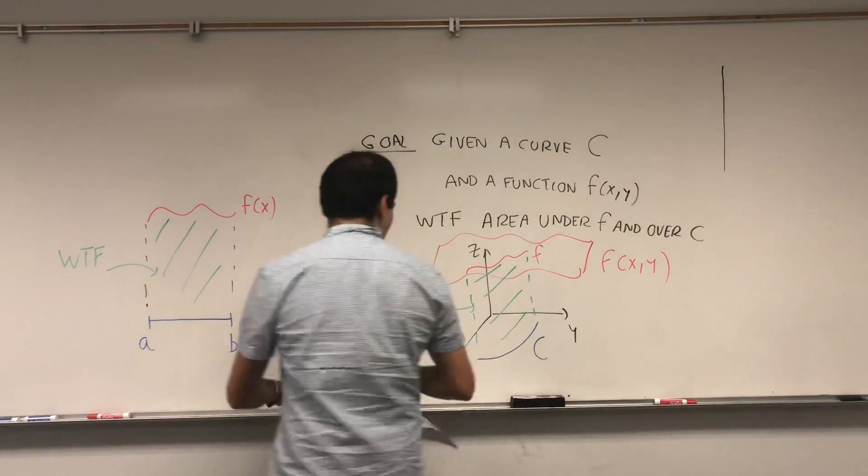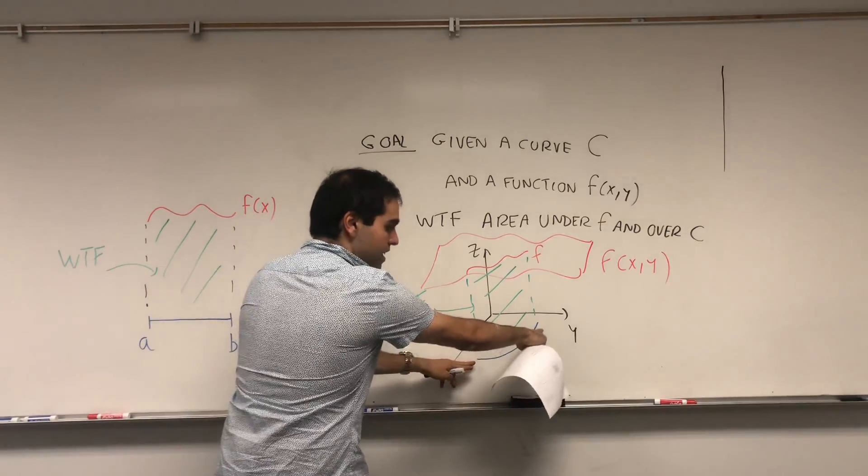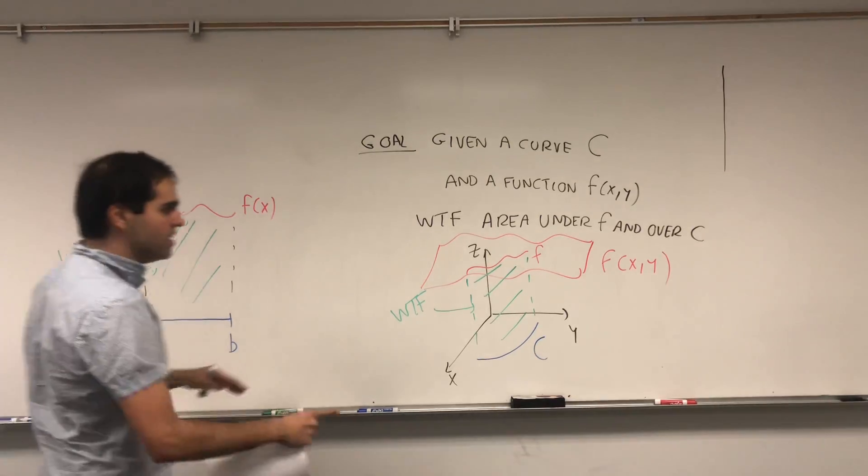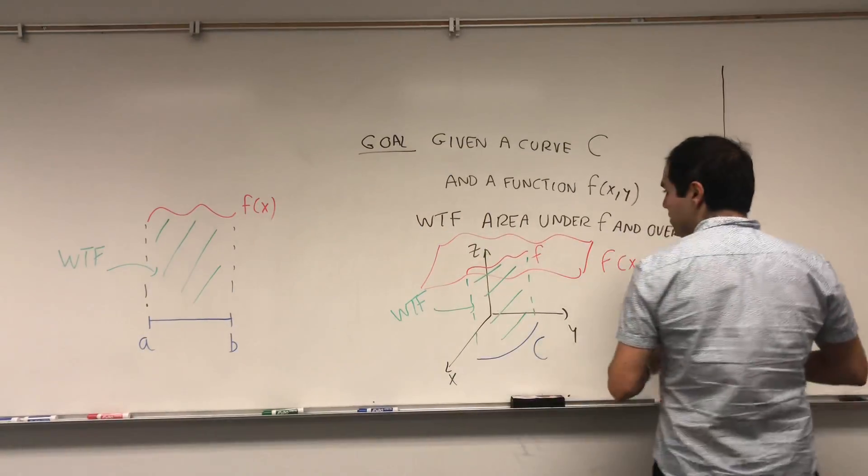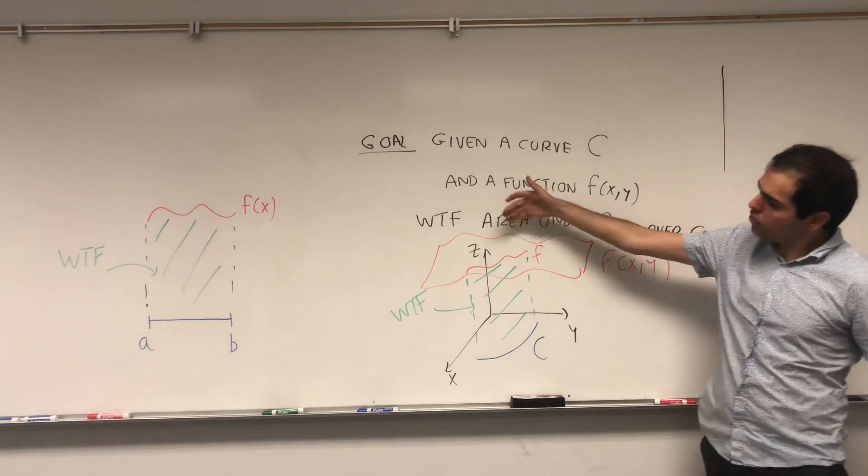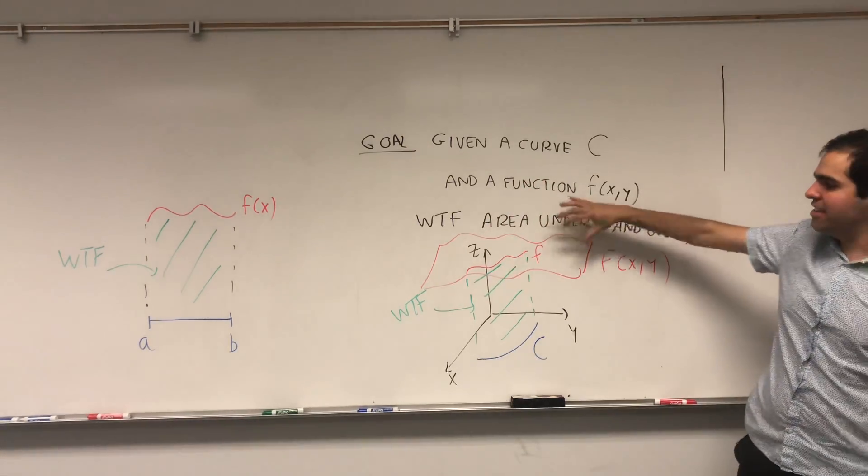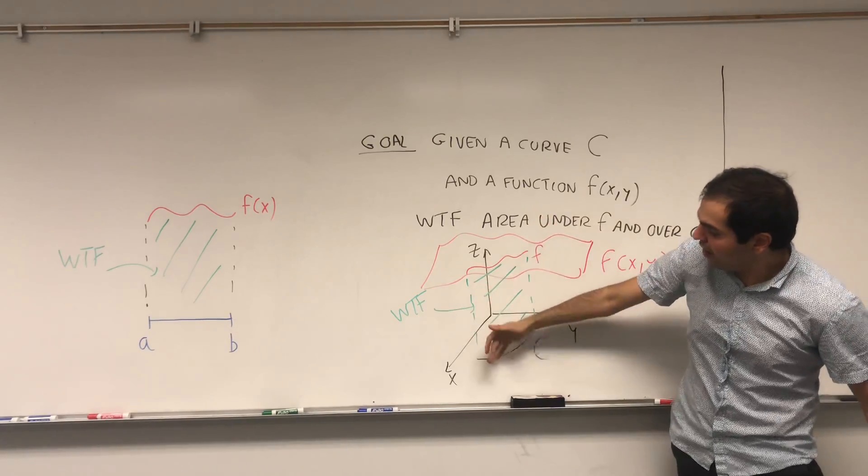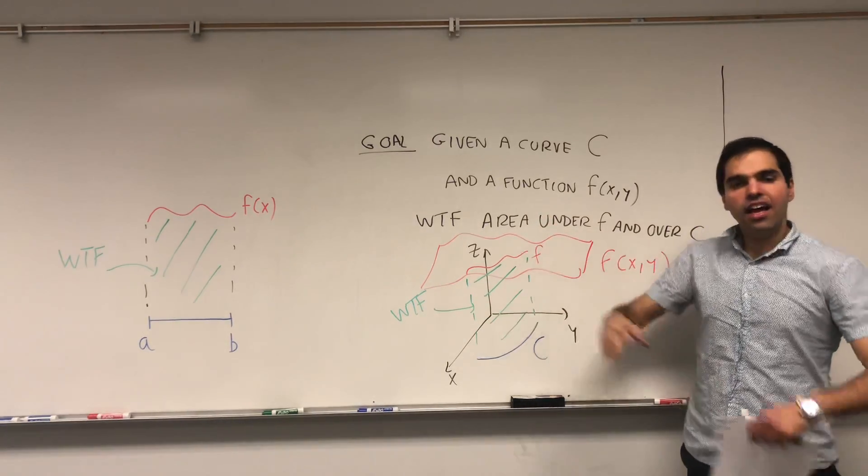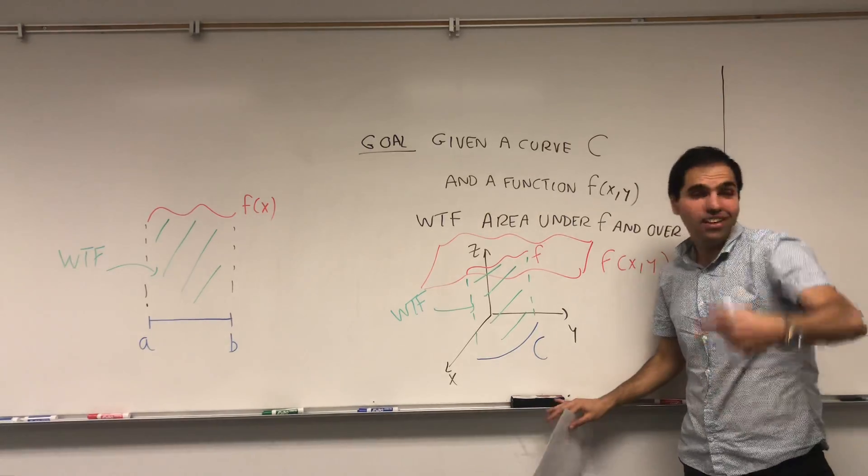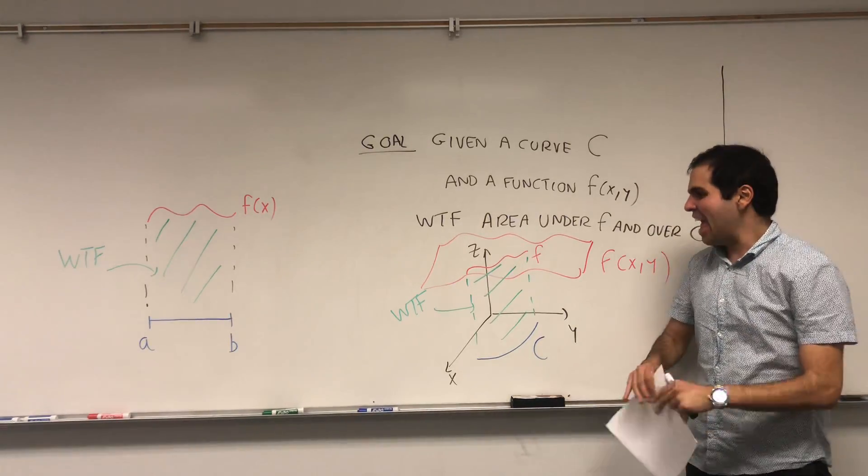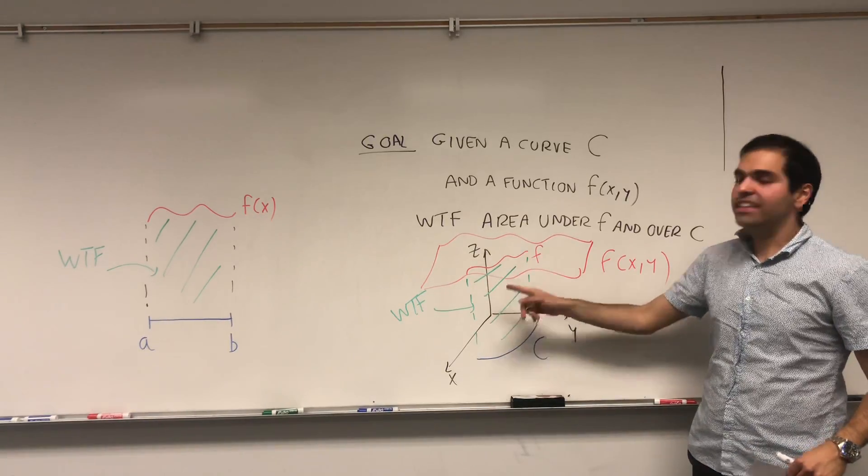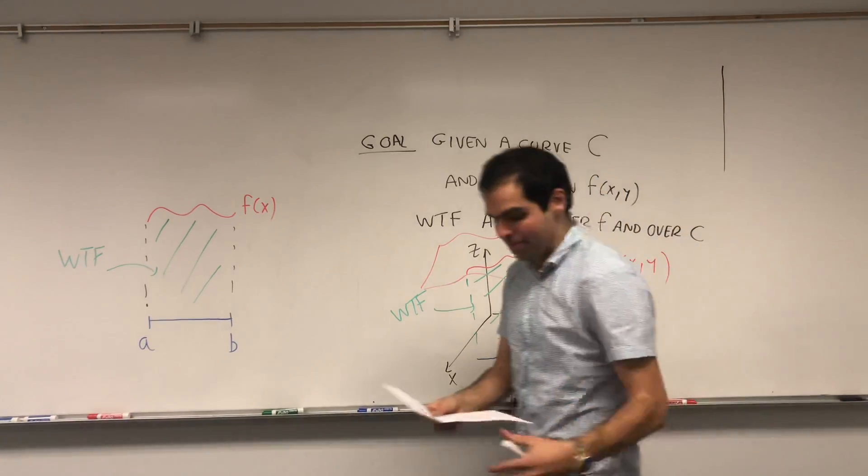So, again, same idea. The base here is c, before it was the interval a comma b, and the height is still f. So, if you want intuitively, think of f as a cake, and you're slicing the cake along the curve c. And then you get a very thin slice, which basically becomes an area, and whatever we'll calculate, we'll calculate the area under this fence.